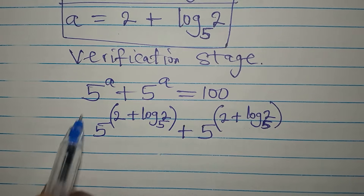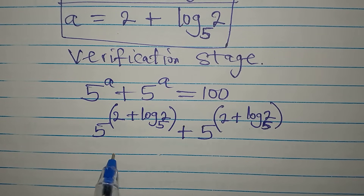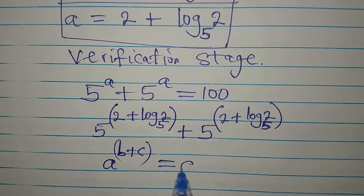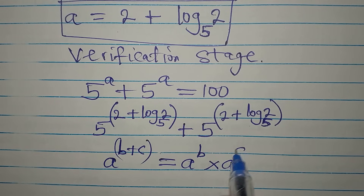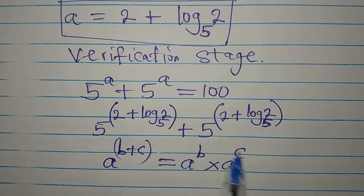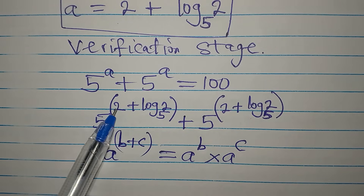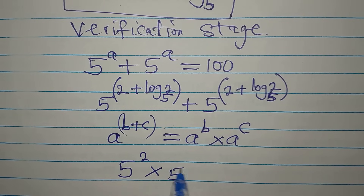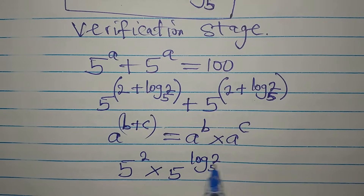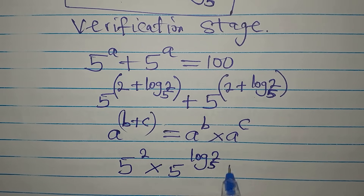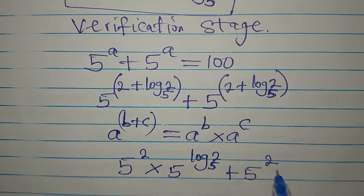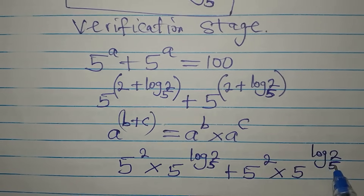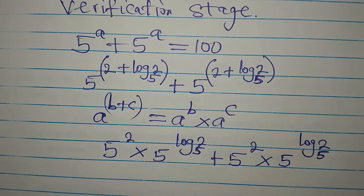There is a law: a to the power of (b + c) equals a^b multiplied by a^c. Applying this law, we write each term as 5 squared times 5 to the power of log₅2, giving us: 5² · 5^(log₅2) + 5² · 5^(log₅2).